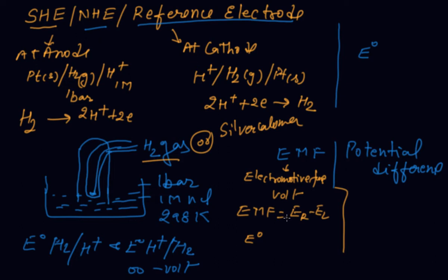When the standard hydrogen electrode is used, it is written as E naught — the standard electrode potential — where EMF equals E right minus E left, which is also written as E cathode minus E anode.